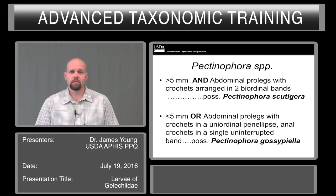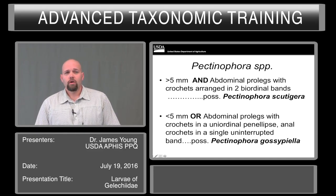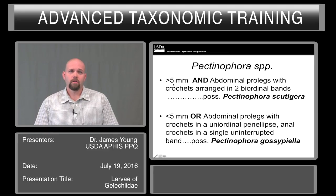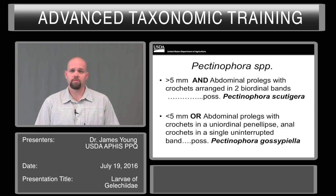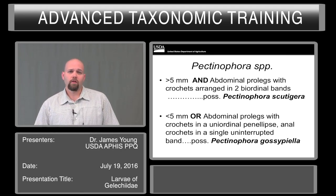To separate the two species, the first thing you can look at is the size of the larvae. If it is a full-grown larva and is more than five millimeters, and the abdominal prolegs have the crochets arranged in two biordinal bands, it's possibly Pectinophora scutagera. This is a species not known to occur in the U.S. If the larva is less than five millimeters...